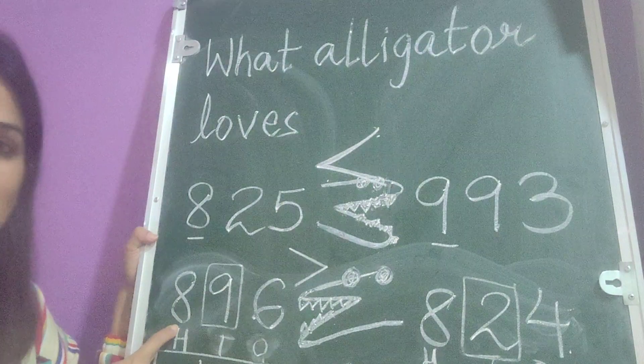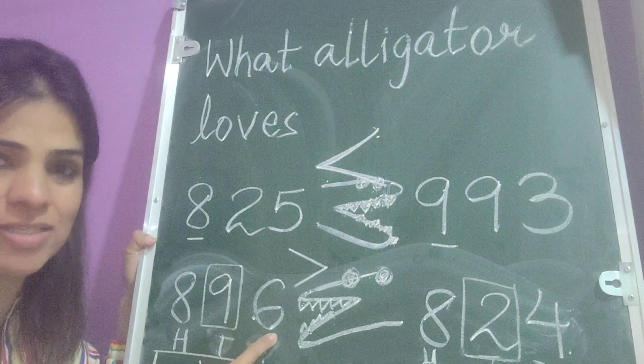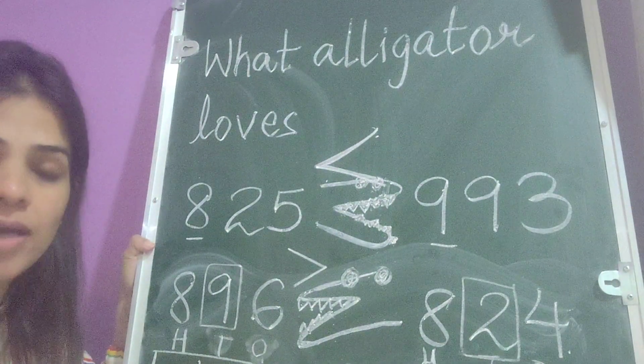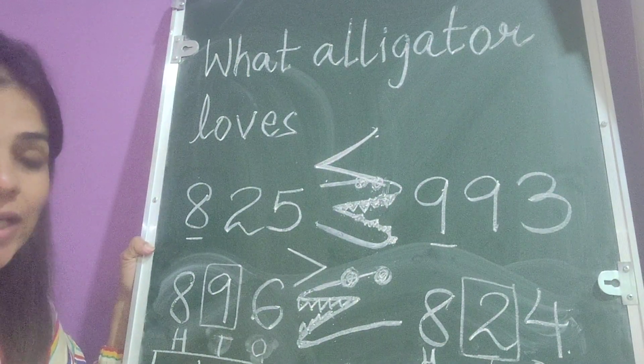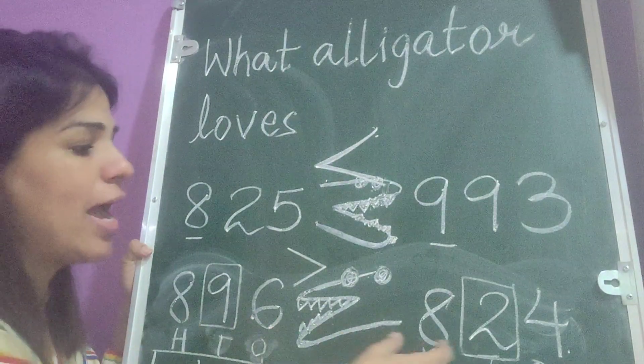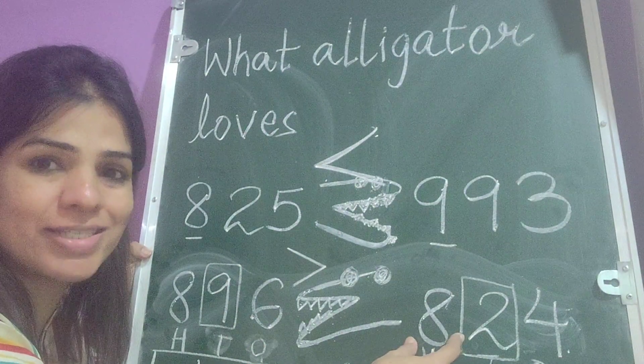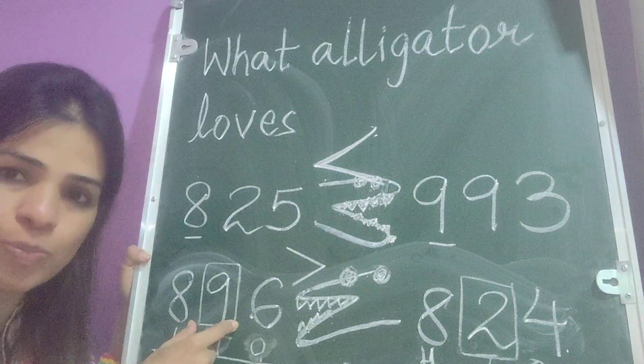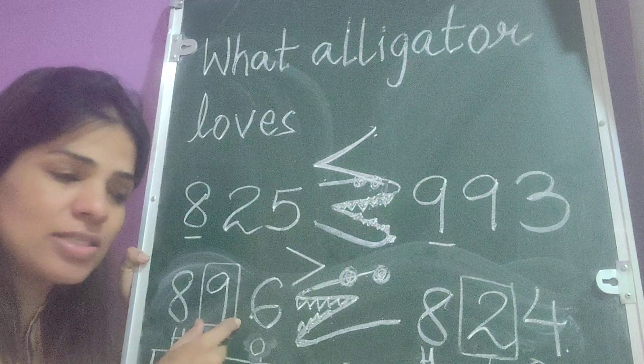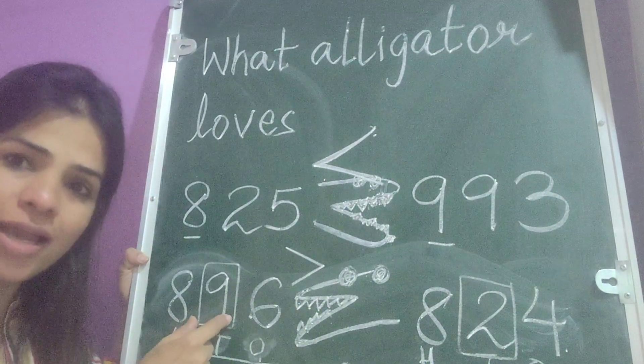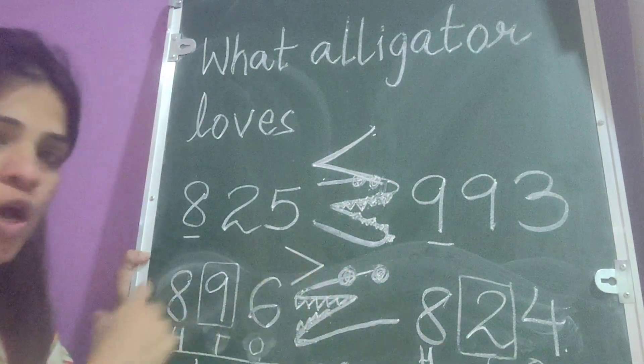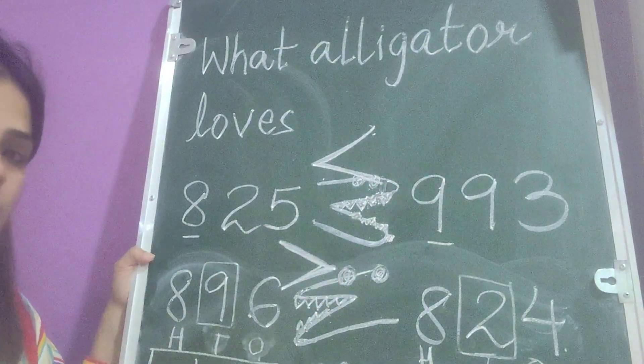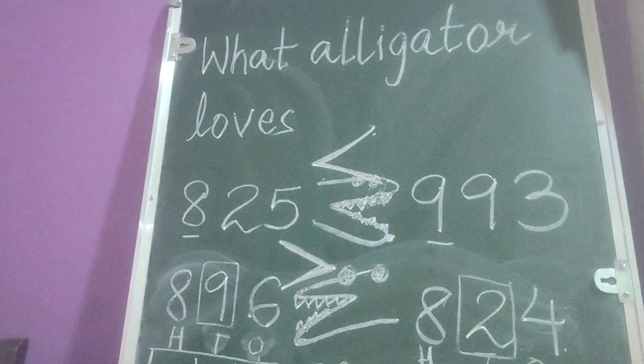Let me take you to the other number, that is 896 and 824. Now here the alligator gets confused and he thinks the hundredth place value digit and the hundredth place value digit is same. What am I supposed to do? I am supposed to move to the next place value, that is tens. Nine is bigger, two is smaller, and thus the alligator eats the bigger number.